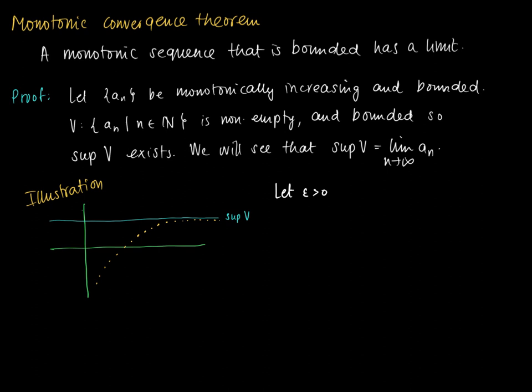Assume epsilon is greater than zero. We need to show that we can find an index N such that for this index and beyond, the difference between the supremum of V and the elements a_n is smaller than epsilon. If we can show this, then we have shown that the limit of the sequence is the supremum of V.